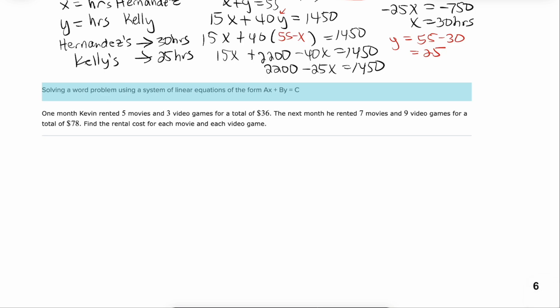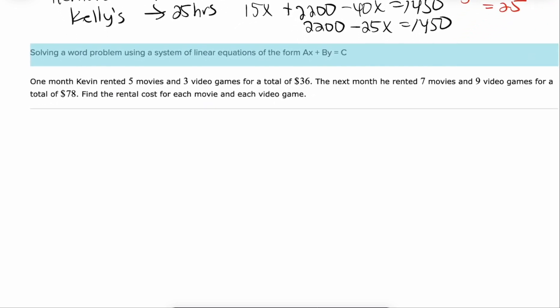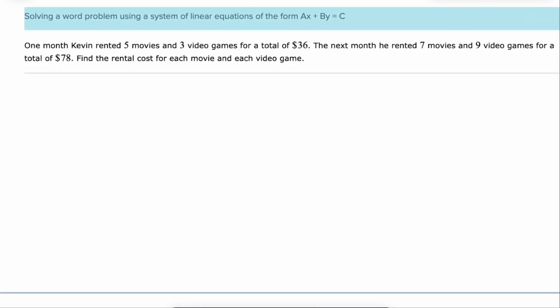One last problem to go. And let's give it a shot. It says one month Kevin rented five movies and three video games for a total of $36. The next month he rented seven movies and nine video games for a total of $78. Find the rental cost for each. So our variables are going to be x could be the movies he rented and y would be the video games.